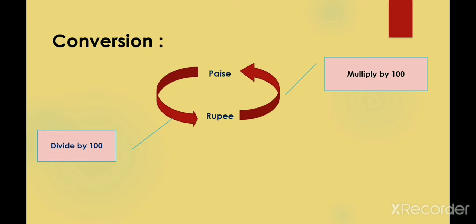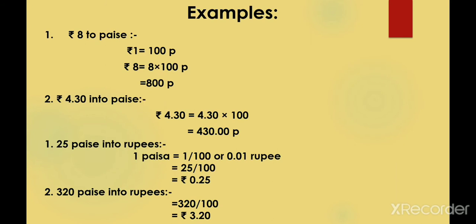Let's discuss some examples showing how to convert rupees into paise. We know 1 rupee equals 100 paise, so 8 rupees equals 100 × 8, which is 800 paise. Another example: rupees 4.30 converted to paise — 4.30 multiplied by 100 gives 430 paise.